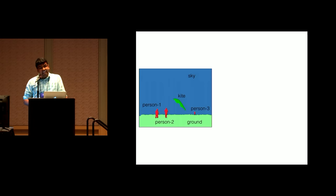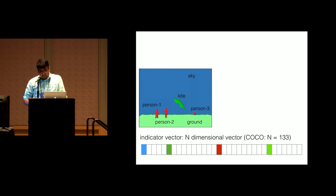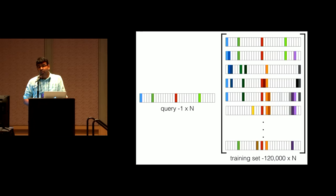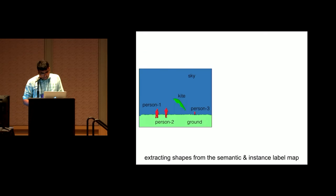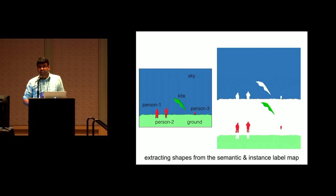We make use of hierarchical matching for efficient retrieval of images, shapes, and parts. We use an indicator vector that tells what categories are present. This indicator vector helps us to quickly find the relevant matches in the training set, thereby reducing the search space for shapes drastically. We now have to look in less than one percent of the dataset to get the required shapes.